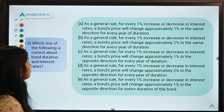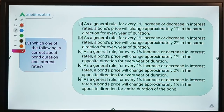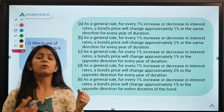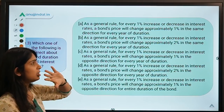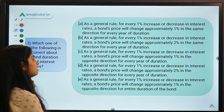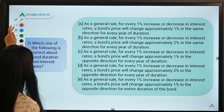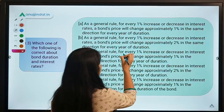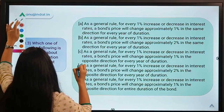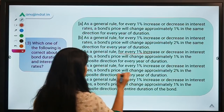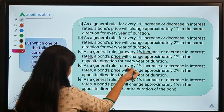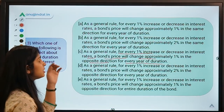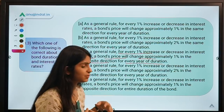Moving to the third question: which one of the following is correct about bond duration and interest rates? Five statements are given about bond duration. You can pause the video, read them carefully, and decide your answer. The solution is option C: as a general rule, for every one percent increase or decrease in interest rate, a bond's price will change approximately one percent in the opposite direction for every year of duration.